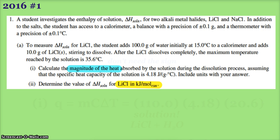Now for part A: to measure the delta H of solution for lithium chloride, the student adds 100 grams of water that was at 15°C, puts it in the calorimeter, adds 10 grams of lithium chloride, dissolves it, and the maximum temperature reached is 35.6°C.